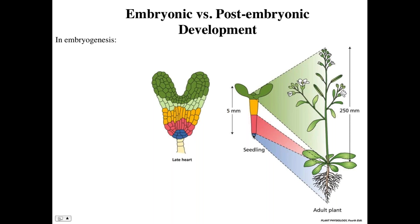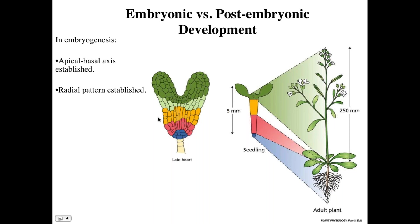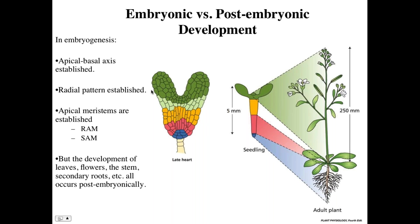The root meristem gives rise to all of the root mass at the bottom of the plant, and the shoot apical meristem gives rise to all of the leaves and vegetative tissues of the plant. In addition, there's a radial pattern established in the embryo. The development of leaves, flowers, stem, and secondary roots is all post-embryonically developed.